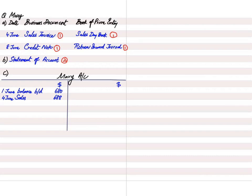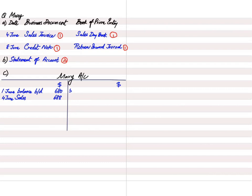On 5th June, Mary sent Kim a cheque for the balance owing on 1st June, which was 680. We need to check whether Mary is eligible for a cash discount. The cash discount applies if payment is made within 14 days. We do not compare 1st June with 5th June; instead we compare the original purchase date of 29th May with 5th June — that is around 6 to 7 days.